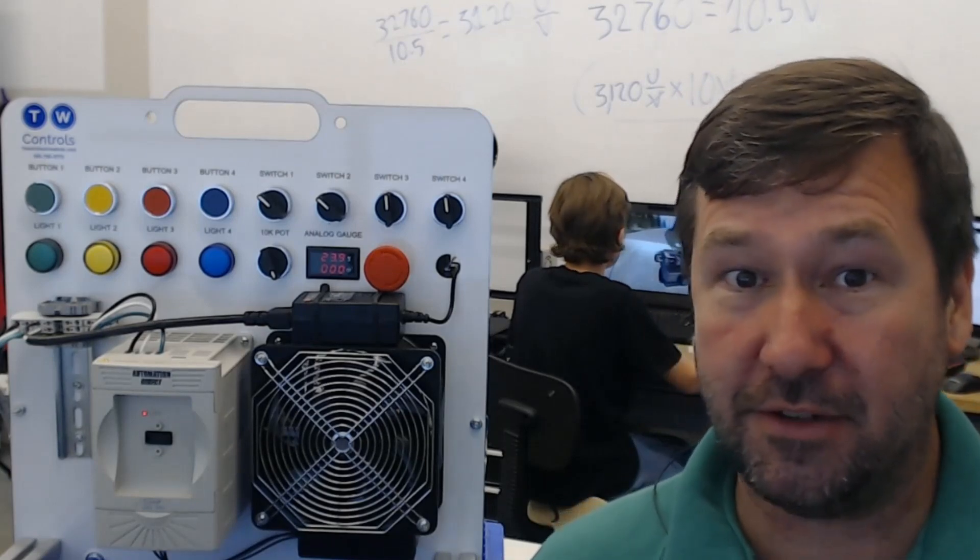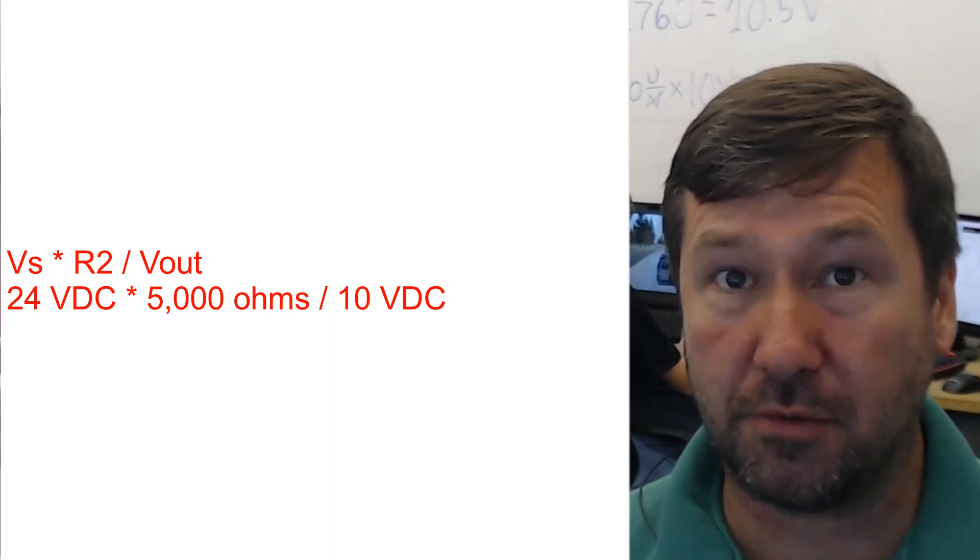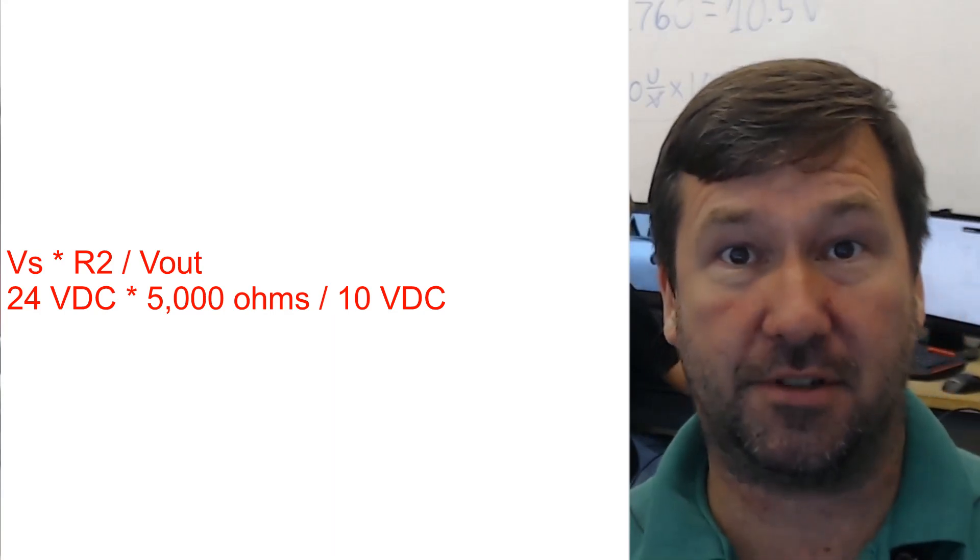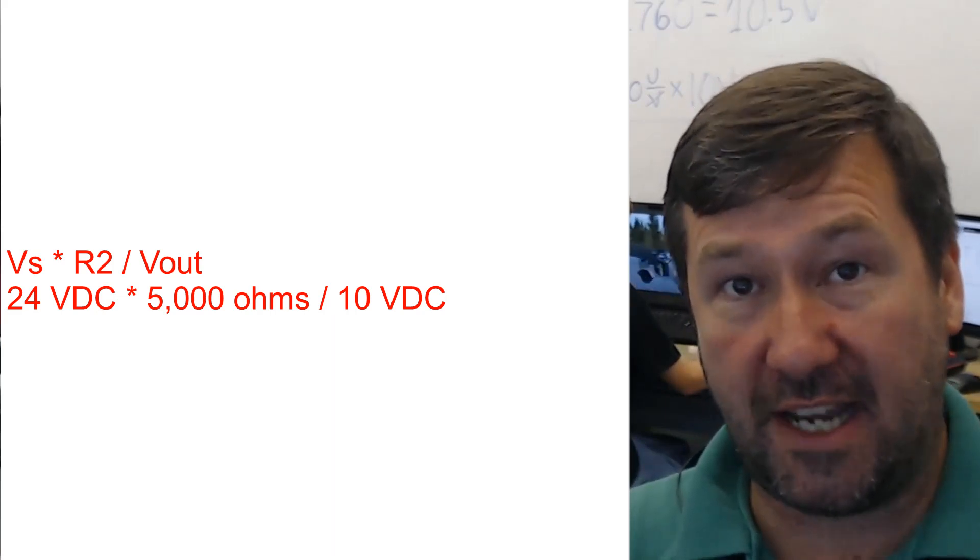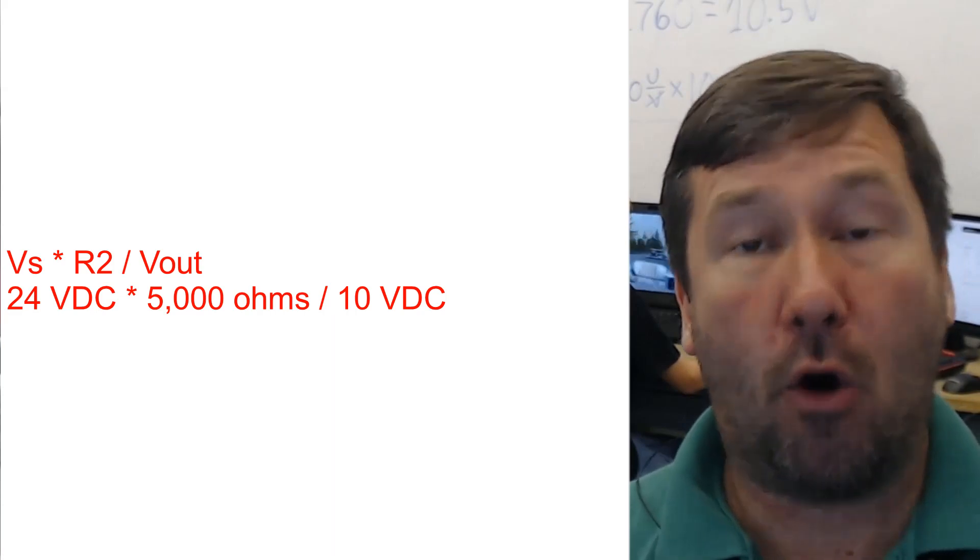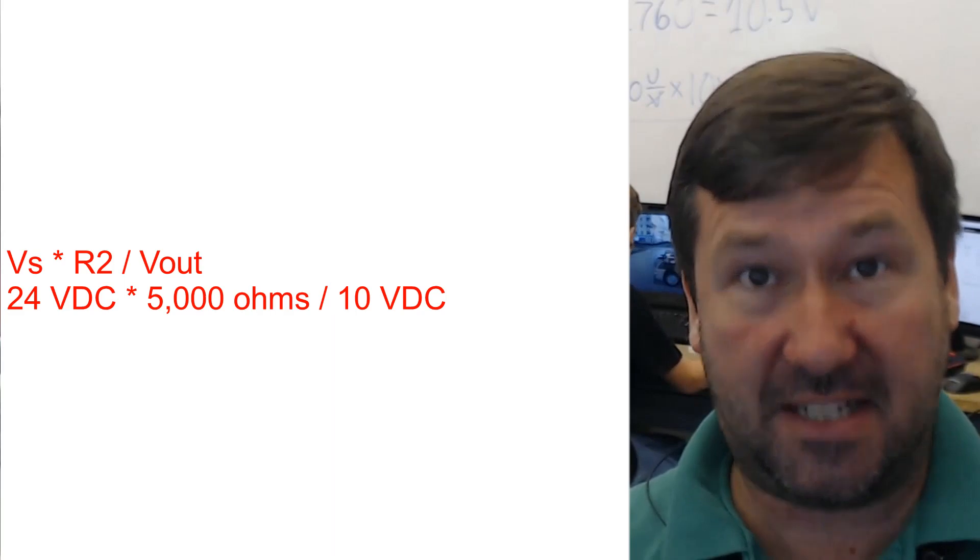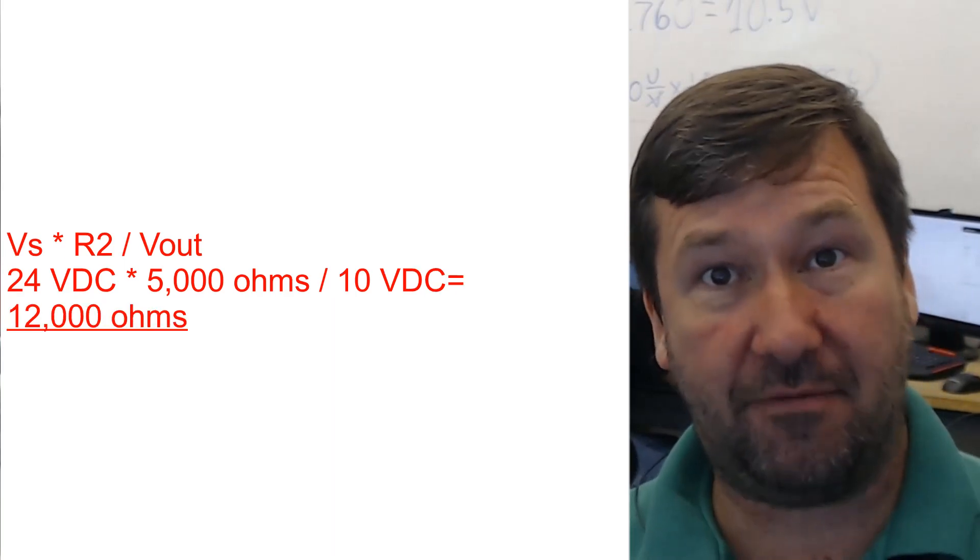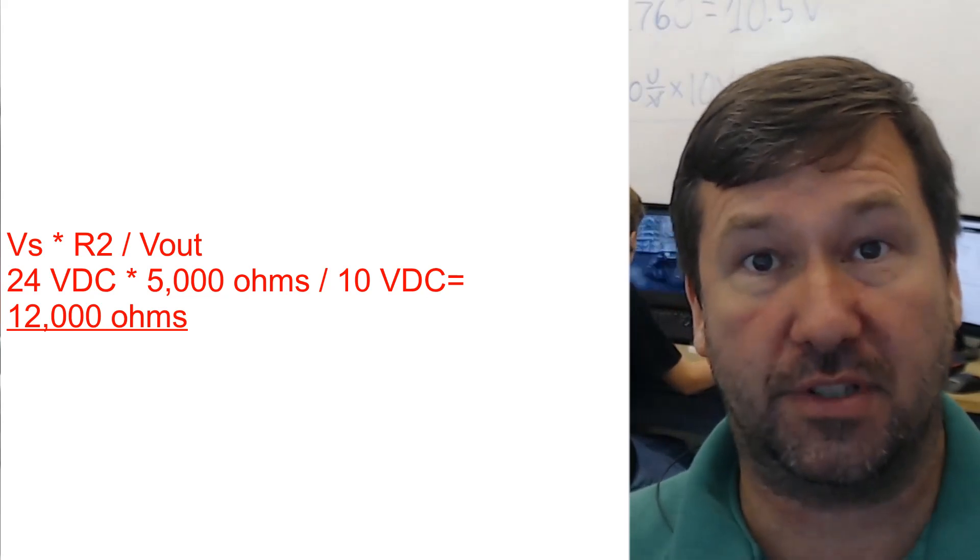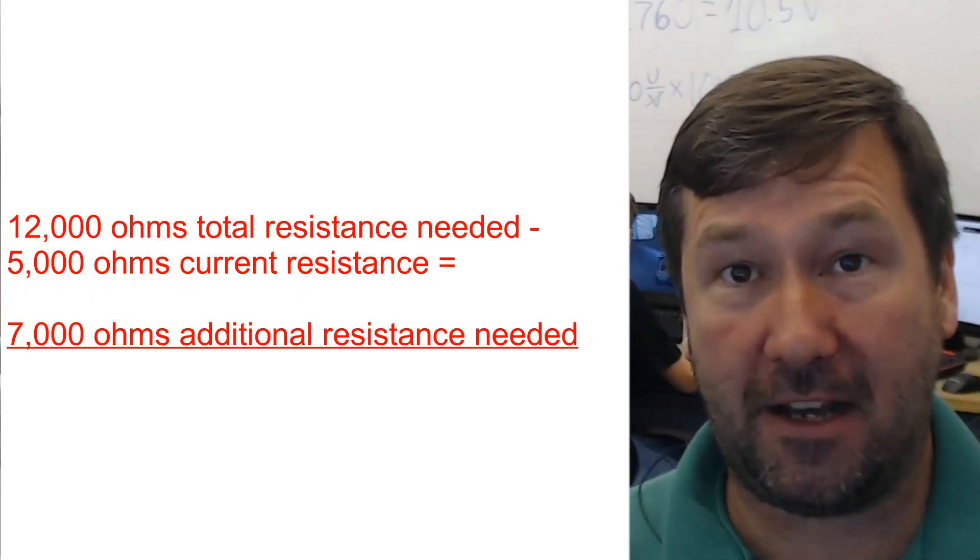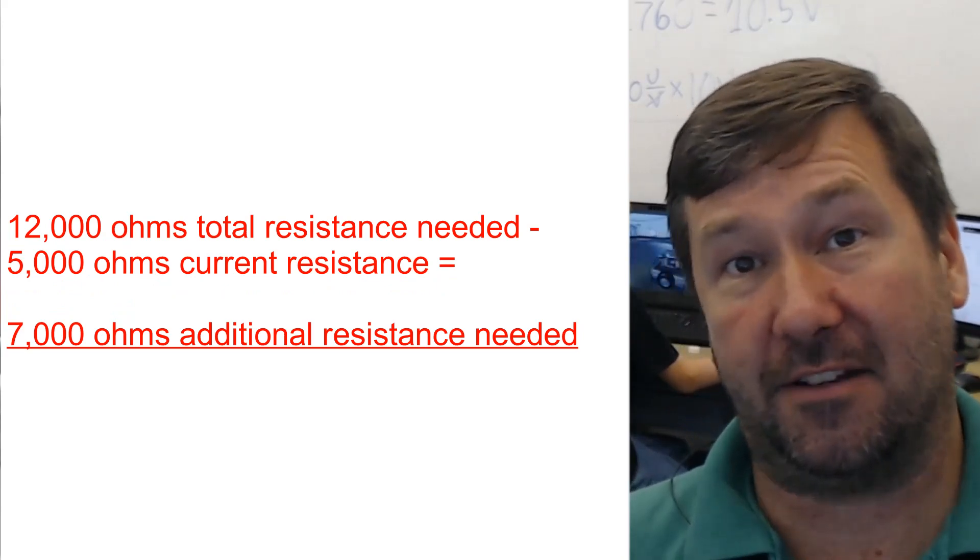Now that sounds really confusing, so check out the formula here. If we plug in our numbers, we have 24 volt DC, that's our supply source on the trainer. Then the resistance across our potentiometer where we're wanting to have 10 volt is 5k or 5,000 ohms, and then our desired voltage across it is 10 volt. So 24 times 5,000 divided by 10 is going to equal 12,000 ohms. Now we already have 5,000 in our circuit so we subtract 5 and we end up with 7,000 or 7 kiloohms.